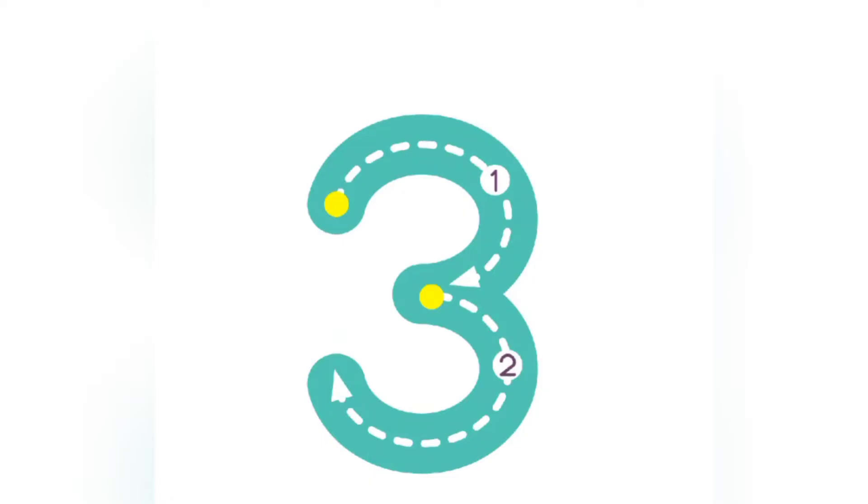So, we have a right curve. First, one right curve, and after that, another right curve. Got it right? Nice. Again, right curve, and another right curve. This is the number 3.